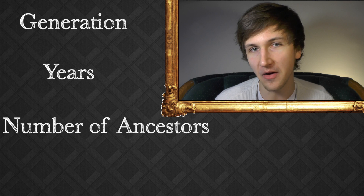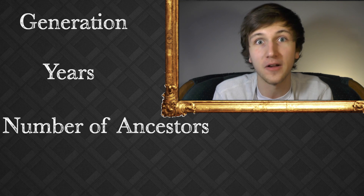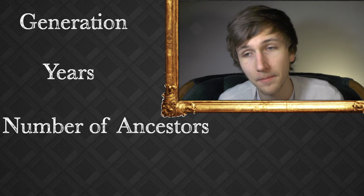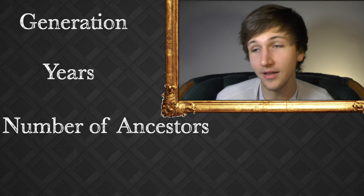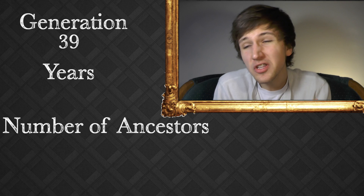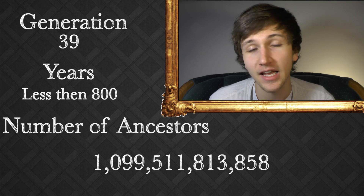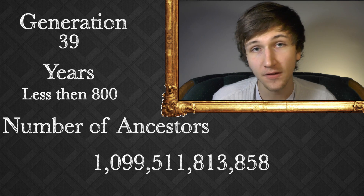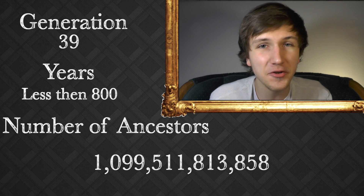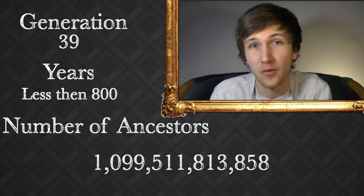We are all very, very lucky people that the right combinations managed to happen in order for us to exist. What about a trillion? Which generation is the first generation to peak a trillion people? It's only 10 generations after that. At the 39th generation, which is about 800 years roughly, there are 1,099,511,813,858 people — all of which would have been necessary for you to exist in a perfect world.